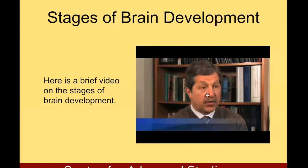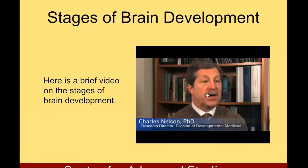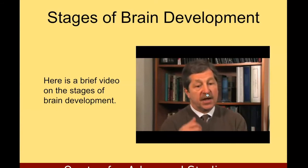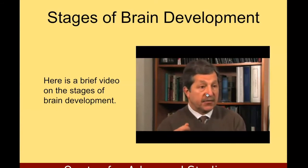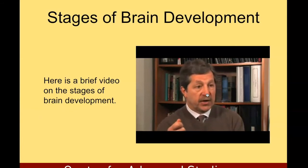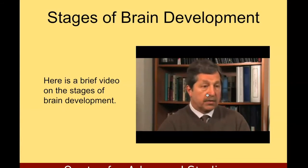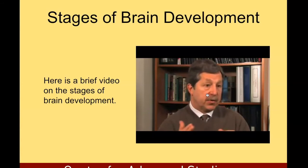Brain development begins about 20 or so days after conception — that's the formation of the neural tube. There is currently a public health campaign to get women to have folic acid in their diets to prevent neural tube defects, since the neural tube forms in the first three weeks after conception, before many women know they are pregnant. From that point on through prenatal development, the brain gets assembled so that by birth the brain looks remarkably like an adult brain — smaller and not as mature, but structurally similar. The big changes that occur postnatally are wiring up the brain.